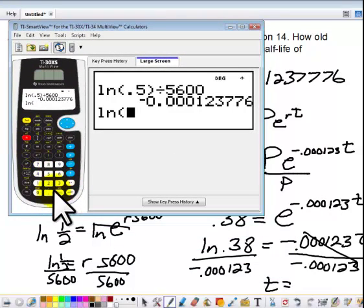So I have ln 0.38, and I close my parentheses, because you don't want to keep parentheses open. That's very rude and nasty.